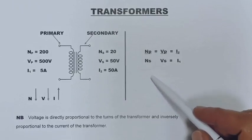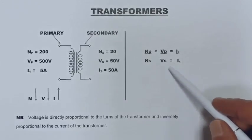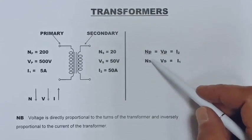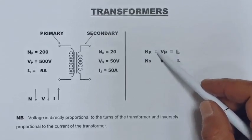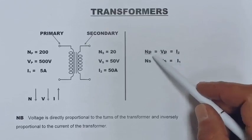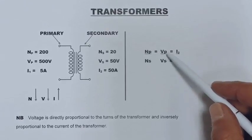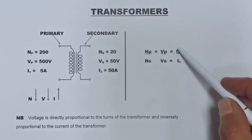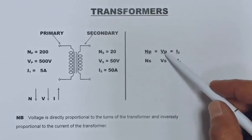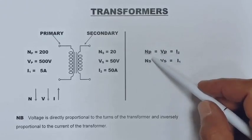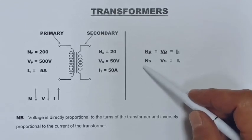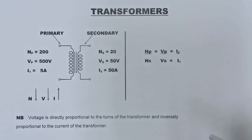That is why the transformer ratio formula looks like this: the turns on the primary over the turns on the secondary equals the voltage of the primary over the voltage of the secondary — because they are directly proportional to each other — and that equals the current of the secondary over the current of the primary, because current is inversely proportional to the voltage and turns of the transformer. Let's go to an example and see how we use these ratios to solve a transformer calculation.